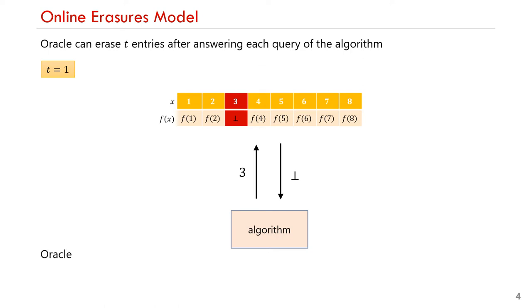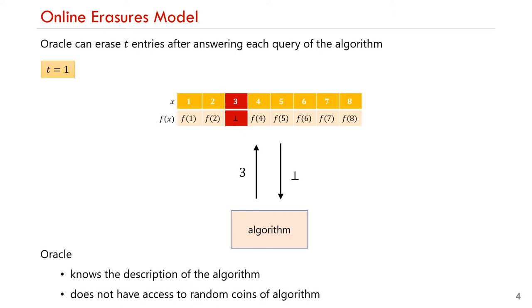In this model, we also assume that the oracle knows the description of the algorithm, but it does not have access to the random coins of the algorithm.